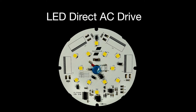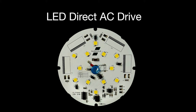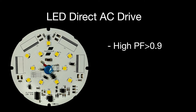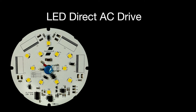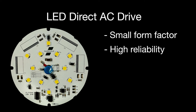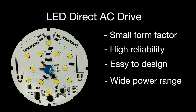Fairchild's compact LED direct AC drive technology enables the industry's most cost-effective integrated circuit lighting solution while still maintaining high PF greater than 0.9 and low THD less than 20%. Our solution provides for a small form factor, high reliability, and is easy to design, offering a wide range of power capabilities including commercial and industrial lighting.